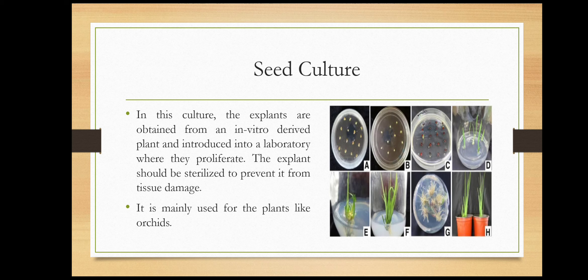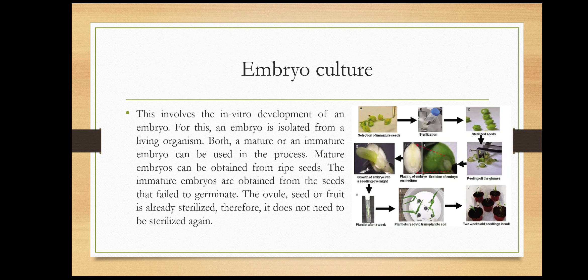The first one is seed culture. In this culture, the explants are obtained from an in vitro derived plant and introduced into a laboratory where they proliferate. The explant should be sterilized to prevent tissue damage. It is mainly used for plants like orchids, which are mainly grown by seed culture techniques. Here is a visual example.